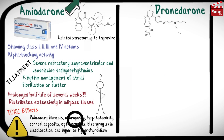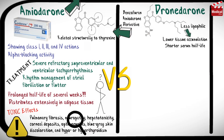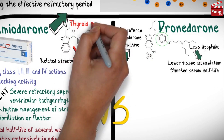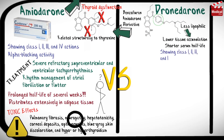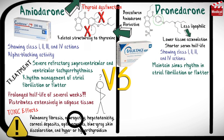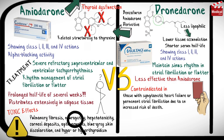Dronedarone is closely related to amiodarone. It is a benzofuran amiodarone derivative which is less lipophilic, so it has lower tissue accumulation and a shorter serum half-life. It doesn't have the iodine moieties that are responsible for thyroid dysfunction associated with amiodarone. Like amiodarone, it has class 1, 2, 3, and 4 actions. It is used to maintain sinus rhythm in atrial fibrillation or flutter, but is less effective than amiodarone. It is contraindicated in those with symptomatic heart failure or permanent atrial fibrillation due to an increased risk of death. Dronedarone has a better adverse effect profile than amiodarone, but may still cause liver failure.